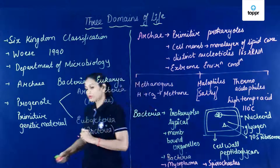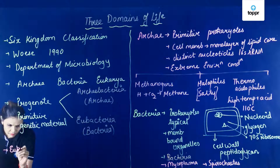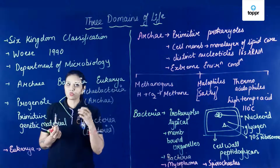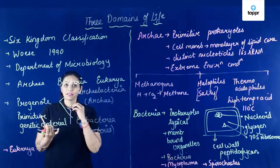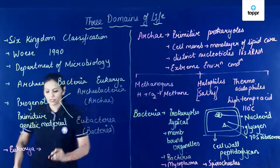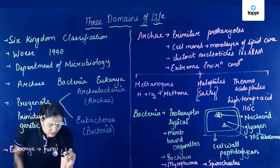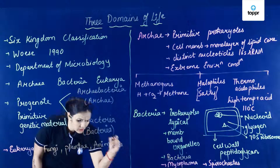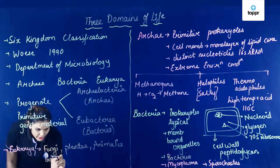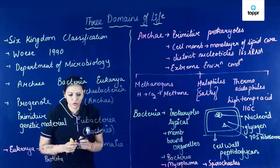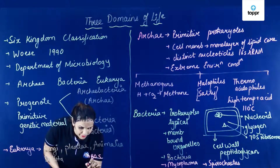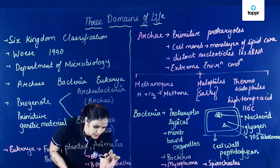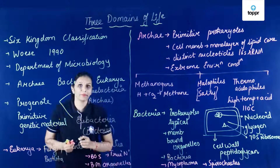Coming to the Eukarya. This Eukarya domain ke andar baaki sare eukaryotes rakhe gaye. That means it includes kingdom Animalia, kingdom Plantae, kingdom Protista, and kingdom Fungi. They include kingdom Fungi, kingdom Plantae, kingdom Animalia, and Protista. Jinke paas 80S type ka ribosome hoga. Membrane bound structures present honge — organelles. And the nuclear material is true, that means it is surrounded by nuclear membrane.